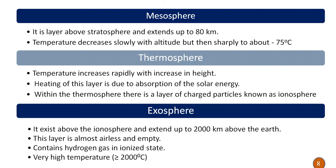Next is the mesosphere. The boundary between the stratosphere and mesosphere is the stratopause. The mesosphere extends above the stratosphere up to a height of 80 kilometers. Temperature decreases slowly with altitude, but eventually drops sharply to about minus 75 degrees Celsius. Above the mesosphere is the thermosphere, where temperature increases rapidly with increase in height due to the absorption of solar energy. Within the thermosphere there is a layer of charged particles known as the ionosphere.